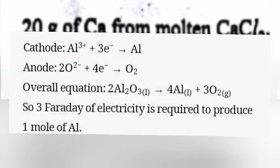2. 54g of aluminium from molten Al2O3. Answer: Cathode: Al^3+ + 3e^- gives Al. Anode: 2O^2- + 4e^- gives O2. Overall reaction: 2Al2O3 gives 4Al + 3O2.